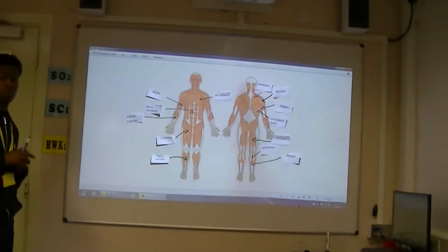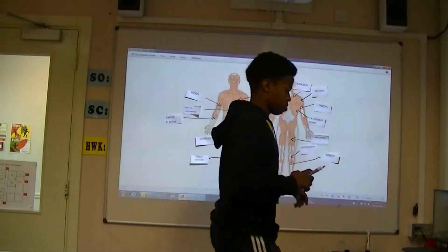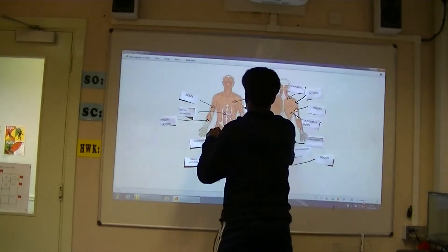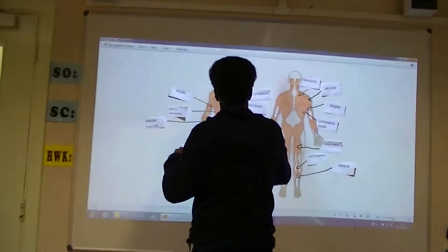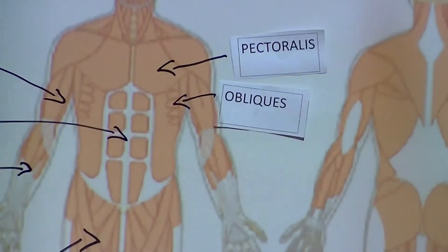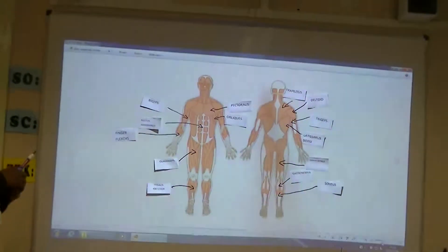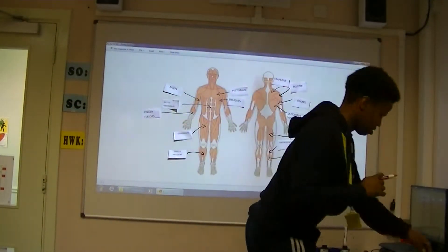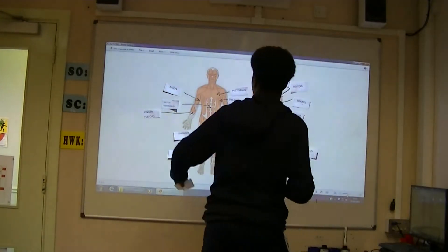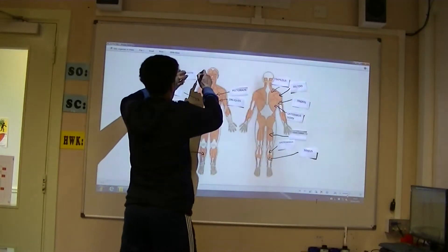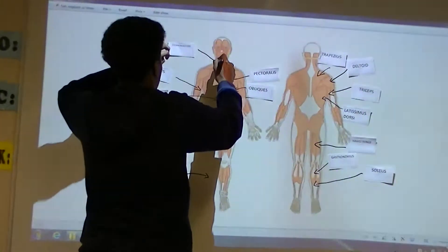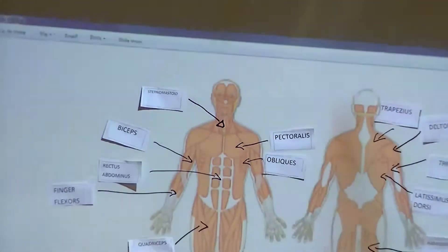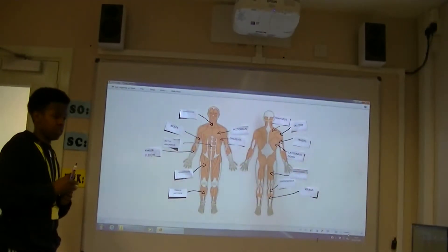Can you show where the obliques are? Can you show where the sternomastoid is please? And finally, can you show where the rhomboid major is?